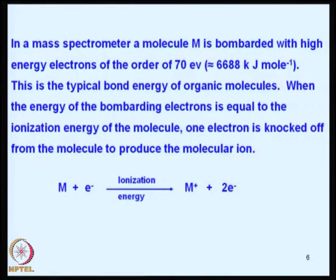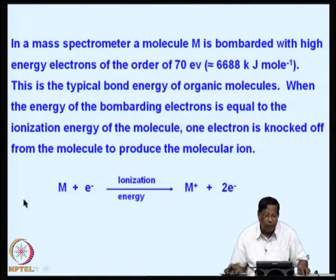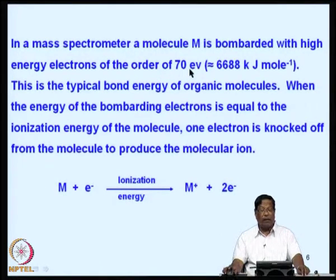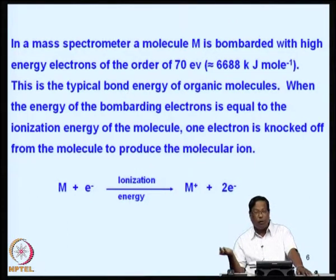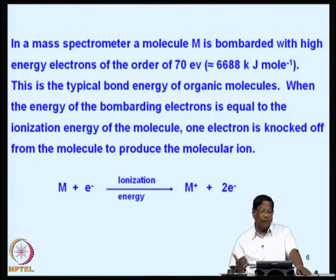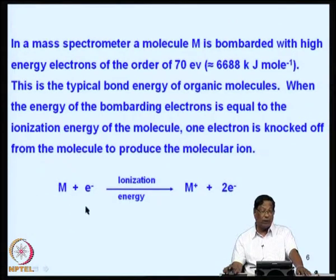In a mass spectrometer, a molecule M is bombarded with high-energy electrons of the order of about 70 electron volts, which corresponds to approximately 6688 kilojoules per mole — this is the typical bond energy of organic molecules. When the energy of the bombarding electrons equals the ionization energy of the molecule, one electron is knocked off to produce the parent ion.